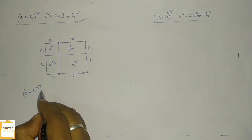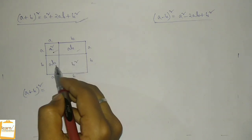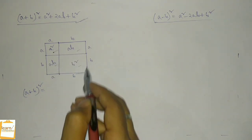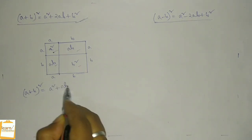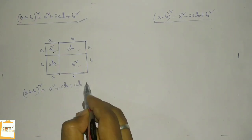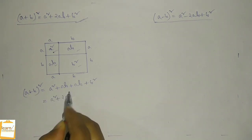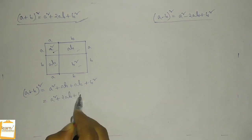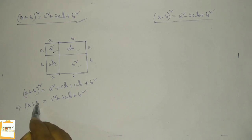The area of the big square is equal to the area of these four parts — that is a squared plus ab plus ab plus b squared, which equals a squared plus 2ab plus b squared. So this is how this formula came.